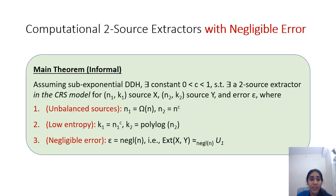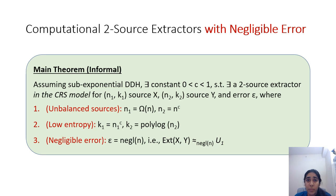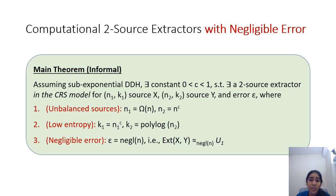In this model, our main theorem is the following. Assuming sub-exponential hardness of the DDH assumption, there exists a constant c between 0 and 1 such that there exists a two-source extractor in the CRS model for two sources: x on n1 bits with min entropy k1, and y on n2 bits with min entropy k2. The extractor has error epsilon, where the size of the first source is omega(n), with n as a security parameter; the size of the second source is n to the c; the first source has entropy n1 to the c; the second source has entropy polylogarithmic in n2; and the error is negligible in n — that is, the output is computationally indistinguishable from a uniformly chosen random bit.